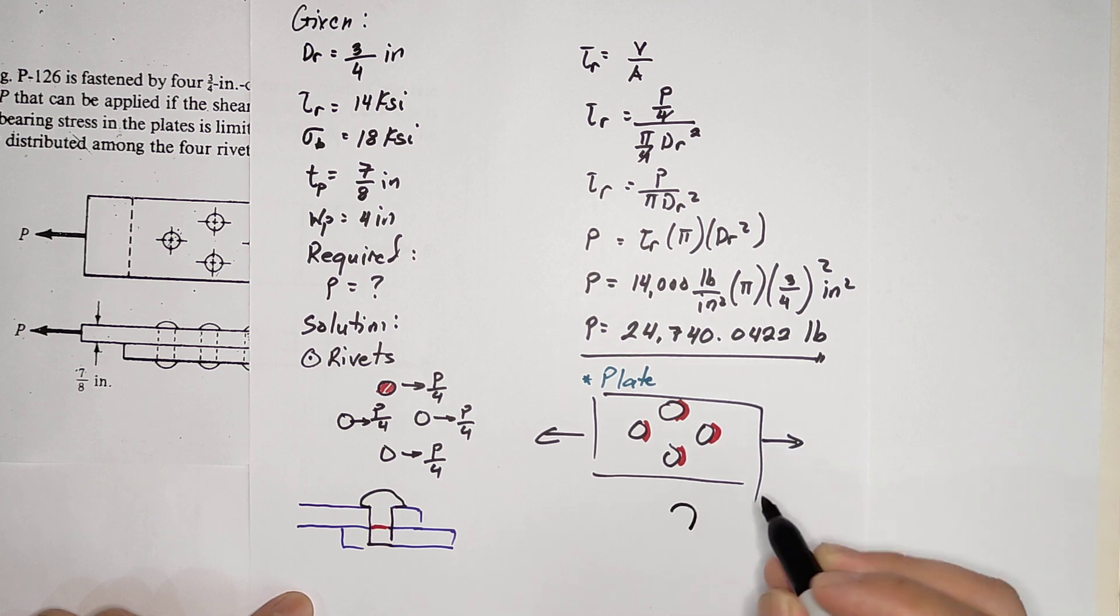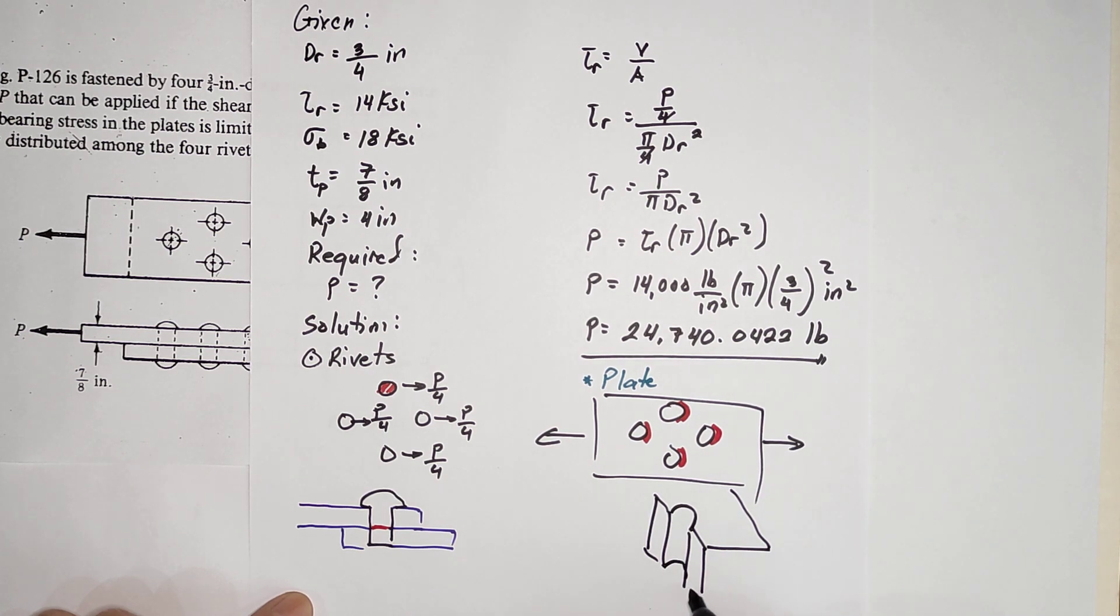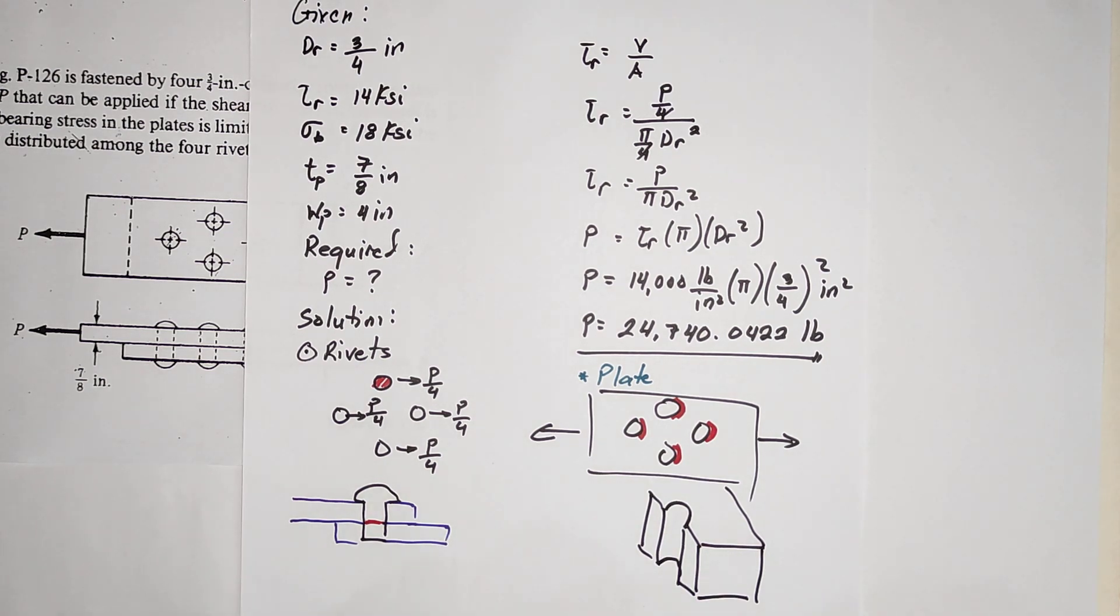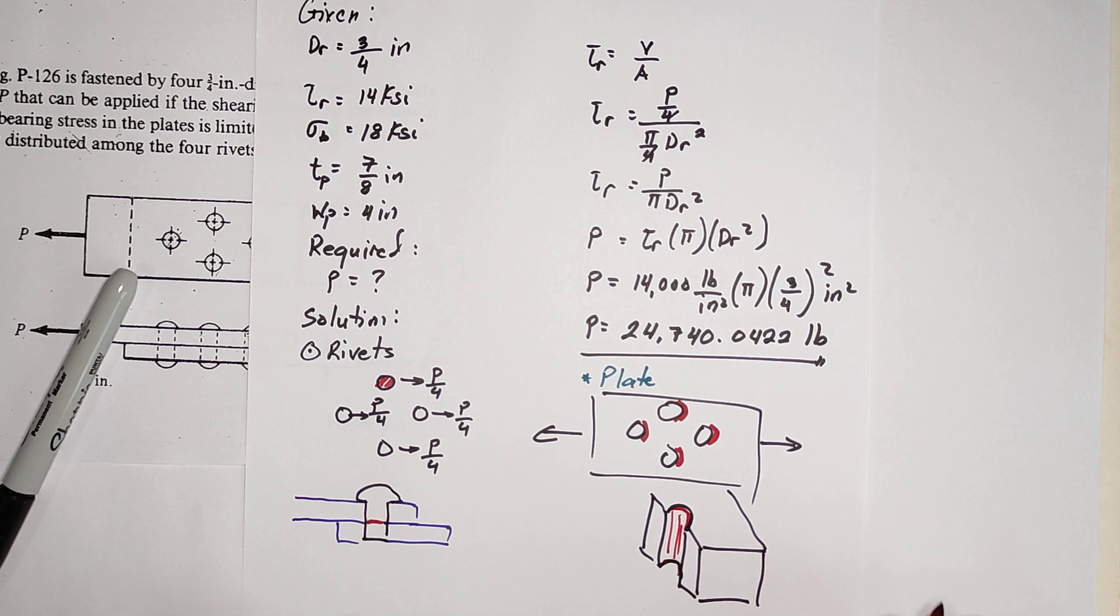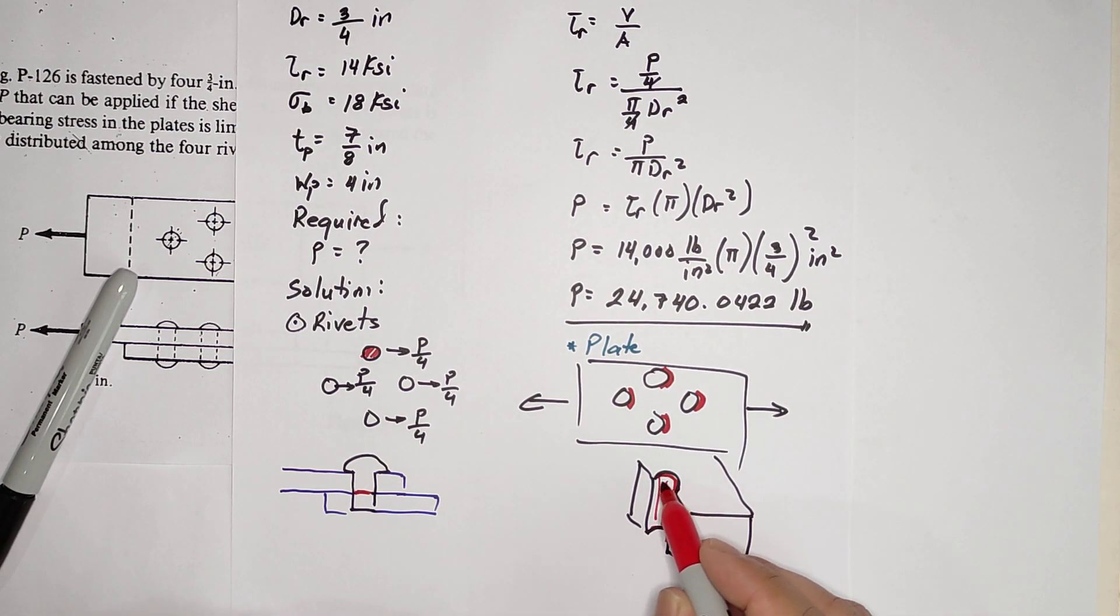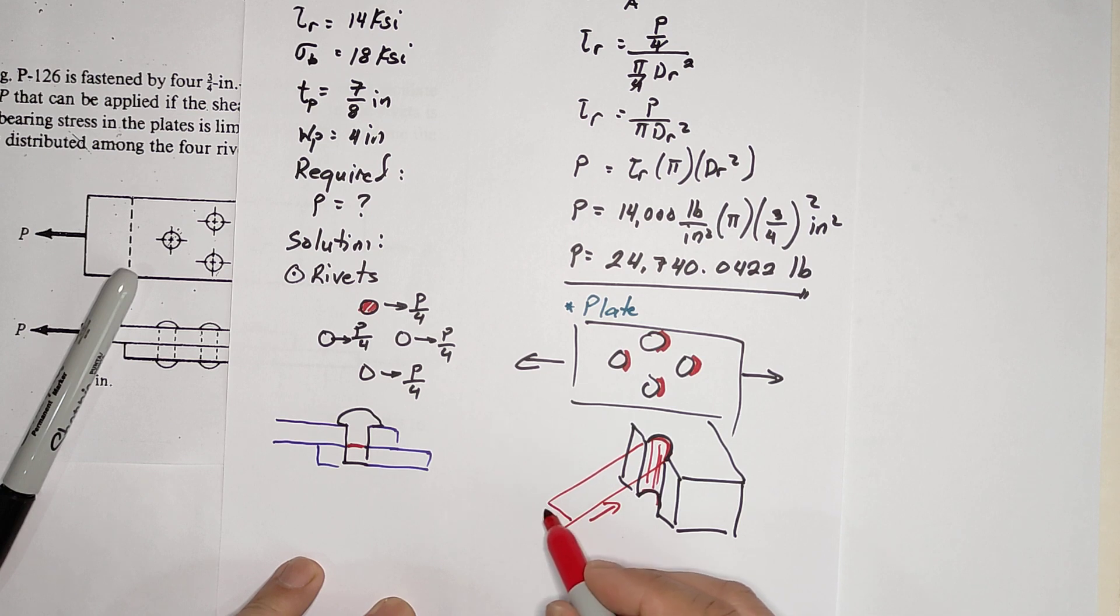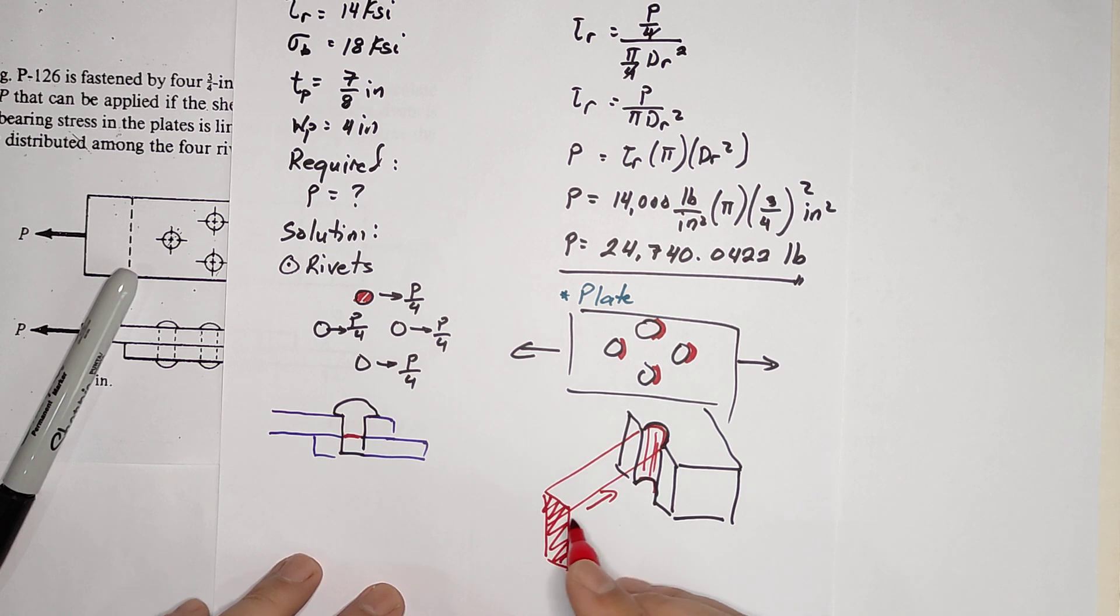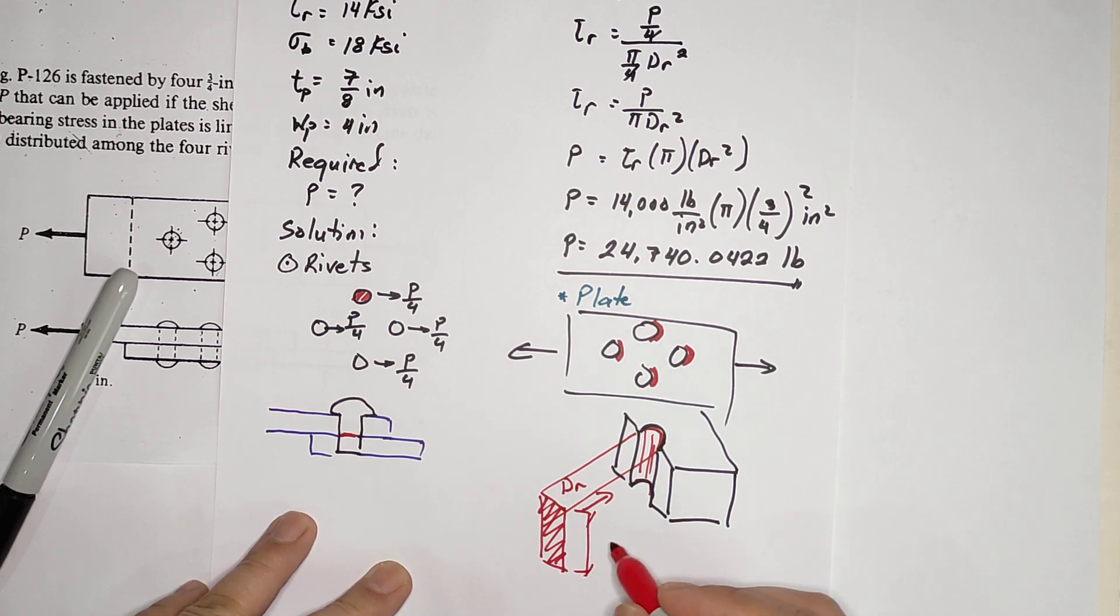In 3D, this hole experiences bearing stress, but the area should not be half the circumference times thickness - it should be the projected area. If you look at this part, the projected area is like this. This is the area for bearing stress, and that area has diameter dr and thickness tp.